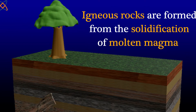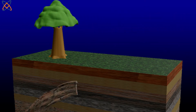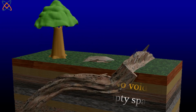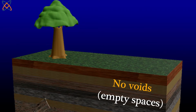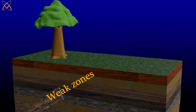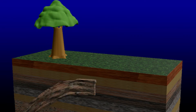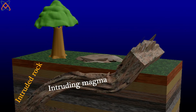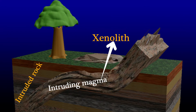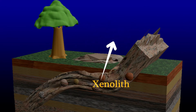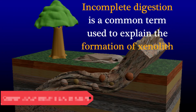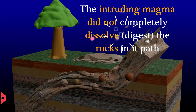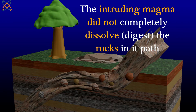Igneous rocks are formed from the solidification of molten magma which finds its way into the Earth's crust, or sometimes to the surface. Because there are no voids in the crust, the magma forces its way through weak zones and cracks. The intruded rocks give space to the intruding magma, and some of the intruded rock may be engulfed inside the intruding rock as a xenolith. Incomplete digestion is a common term used to explain xenolith formation — it means the intruding magma did not completely dissolve the rocks in its path.